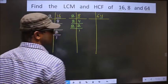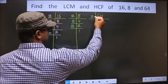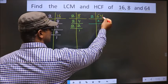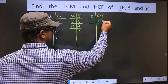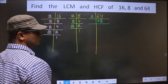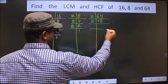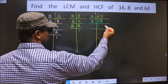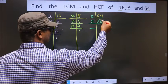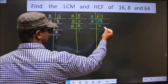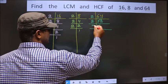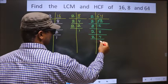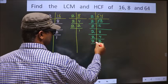Now for 64, we take 2 here. 64 is nothing but 2 thirty-twos. 16 is 2 eights. 8 is 2 fours. 4 is 2 twos. 2 is a prime number, so 2 and 1.